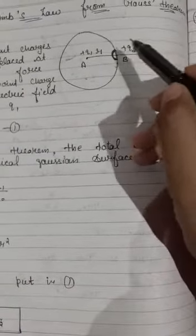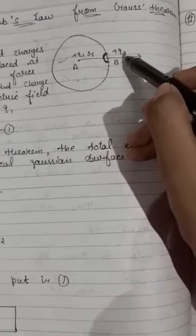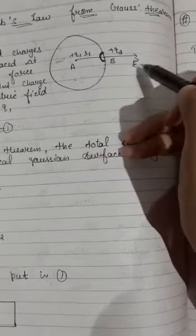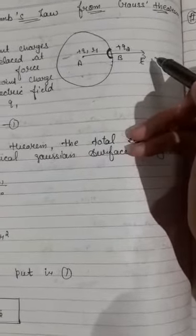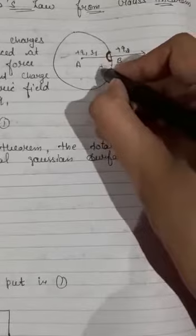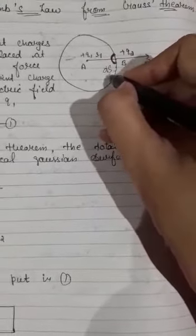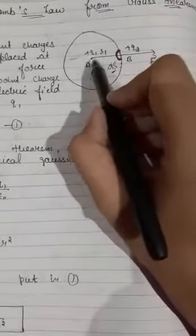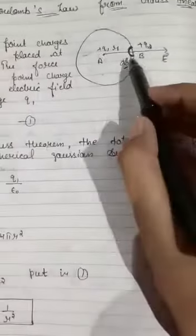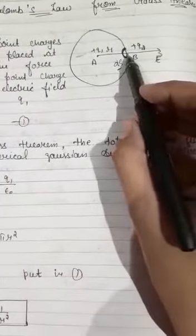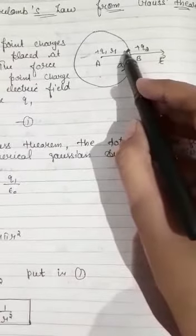I have taken this small portion of this surface and named as ds. The distance from the center of the sphere to the point where I have taken another charge is r. That distance I have taken as r.